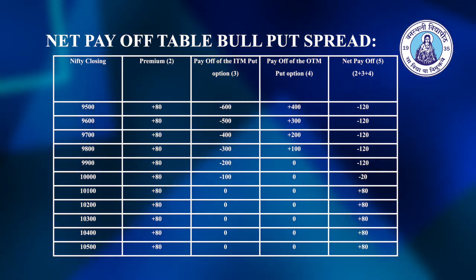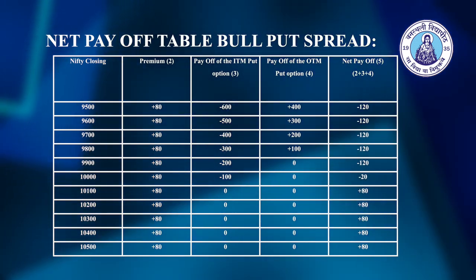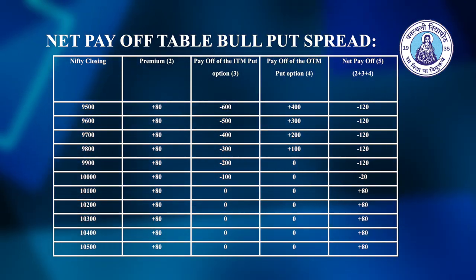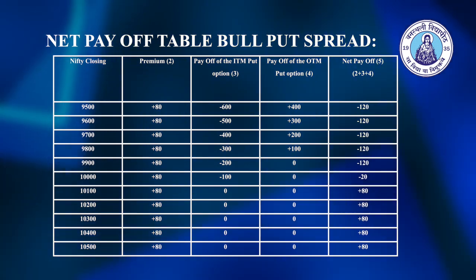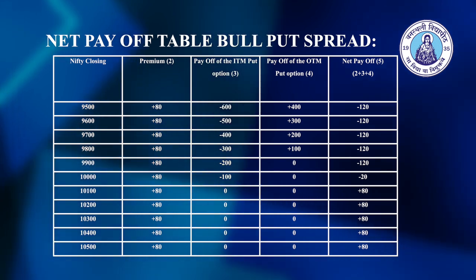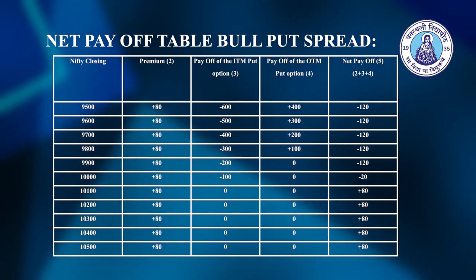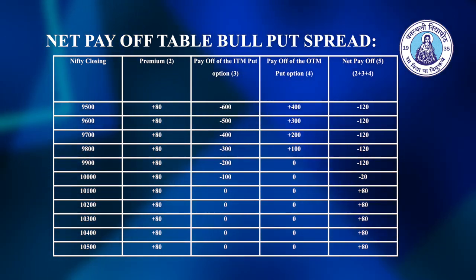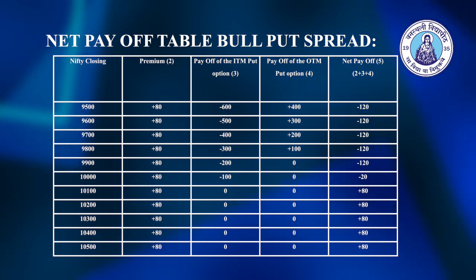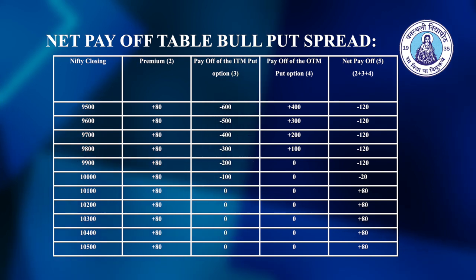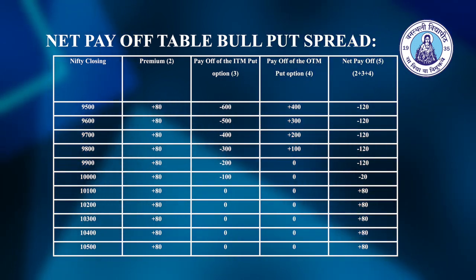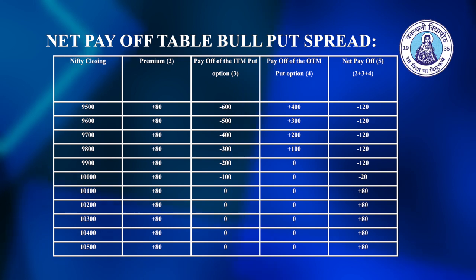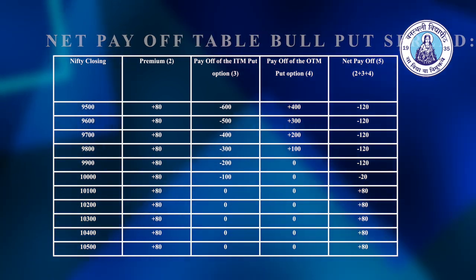At the 10,100 level, the premium is plus 80, ITM put will not execute, OTM put will not execute, and the investor will earn a profit of 80 rupees. Above 10,100 at any higher level, the investor will continue to get a profit of 80 rupees. A chart of the bull put spread has been prepared for reference.